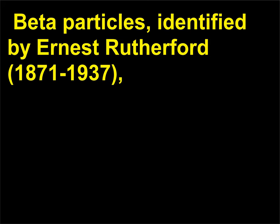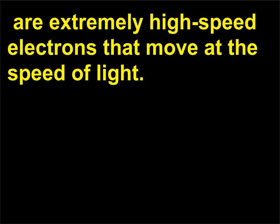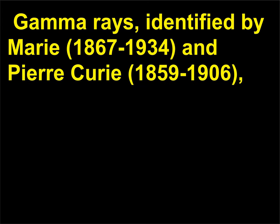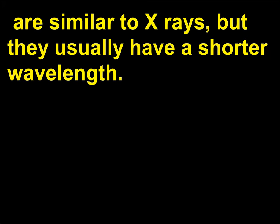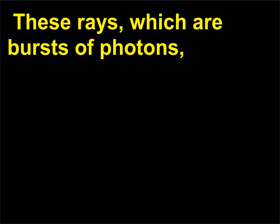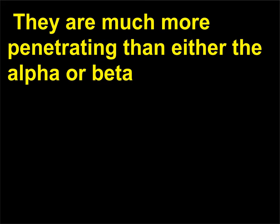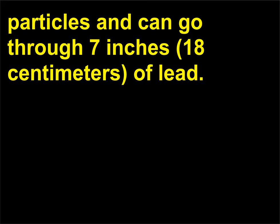Beta particles, identified by Ernest Rutherford (1871–1937), are extremely high-speed electrons that move at the speed of light. They can travel far in air and can pass through solid matter several millimeters thick. Gamma rays, identified by Marie Curie (1867–1934) and Pierre Curie (1859–1906), are similar to X-rays but usually have a shorter wavelength. These rays, which are bursts of photons or very short-wave electromagnetic radiation, travel at the speed of light. They are much more penetrating than either the alpha or beta particles and can go through 7 inches (18 centimeters) of lead.